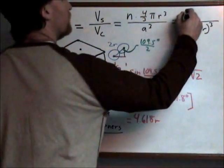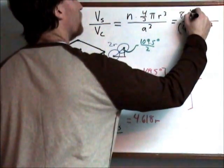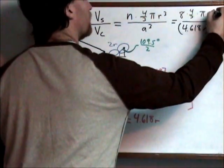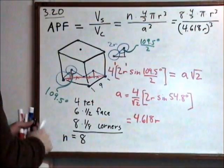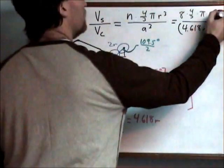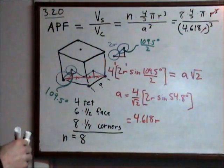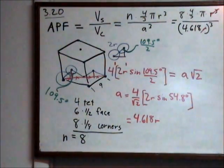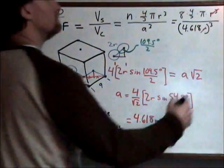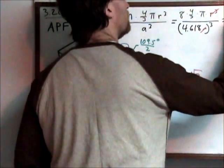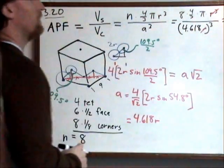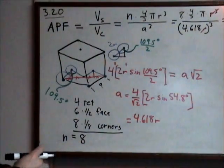So now we have 8 times 4/3 times π times R cubed. Obviously, the R cubed gets canceled out. Finally, after all that, our atomic packing factor calculates out to 0.340.